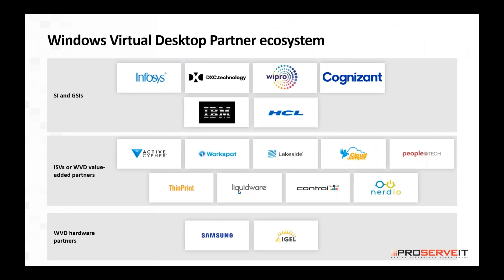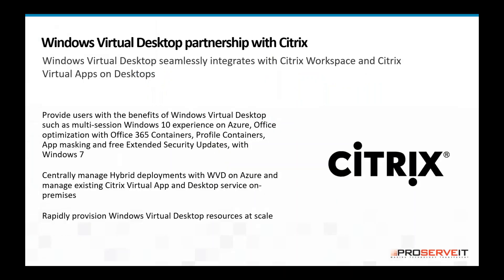Windows Virtual Desktop, even though it's a relatively new solution, does have a pretty broad partner ecosystem that continues to evolve and grow over time. There are a number of SIs and GSIs that have made investments in expanding upon the WVD solution. For those who have worked with VDI solutions in the past — things like VMware Horizon or Citrix Zen Desktop — some of the ISV partners will likely look familiar. Things like ThinPrint, Liquidware Labs, Cloudio, and Lakeside Software — products that have been around for years and supported other VDI solutions — have also been updated to support Windows Virtual Desktop. We also have hardware vendors coming on board building environments specifically tailored to take advantage of Windows Virtual Desktop, with Samsung and IGEL being some of the first.